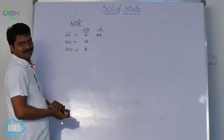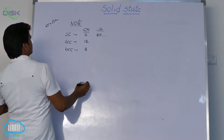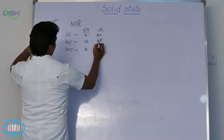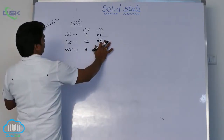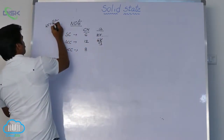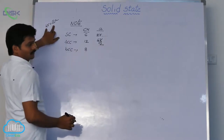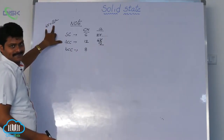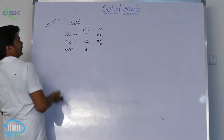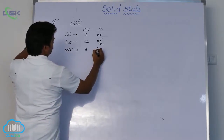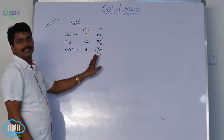For FCC, we have the relation 4R is equal to root 2A. That means A is equal to 4R by root 2. This is for FCC. For BCC, we derived it earlier: 4R is equal to root 3A. That means A is equal to 4R by root 3. So these are the formulas for edge length in each cubic system.